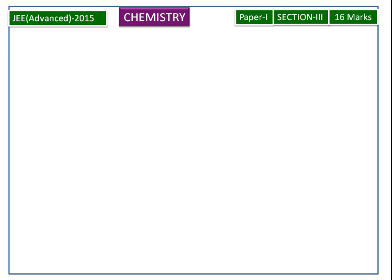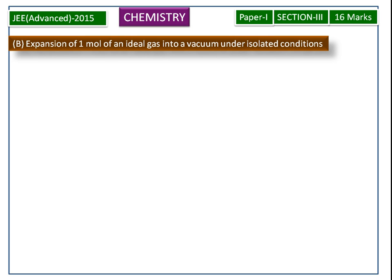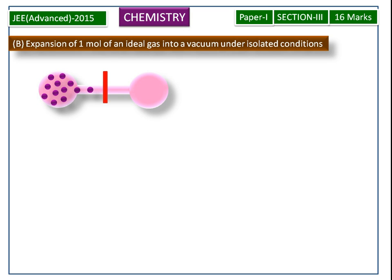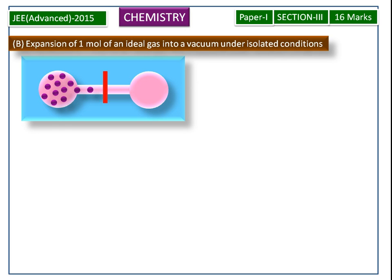Next we see the B process: expansion of 1 mole of an ideal gas into a vacuum under isolated conditions. Let us consider two containers — one container having 1 mole of an ideal gas, the other in vacuum. These two containers are separated by a stopcock valve and surrounded by insulated materials, so it is considered an isolated condition.